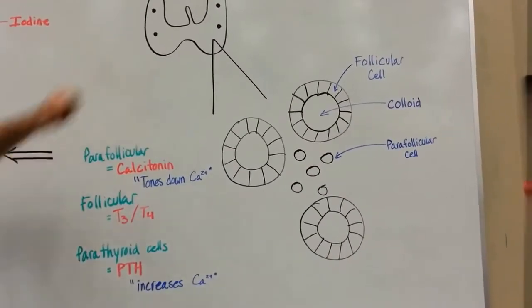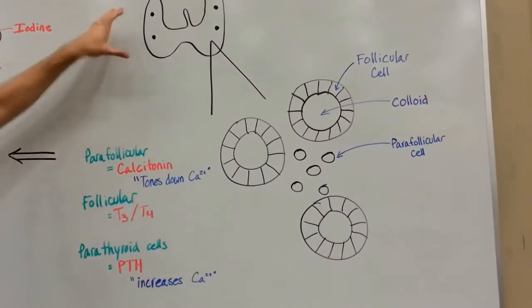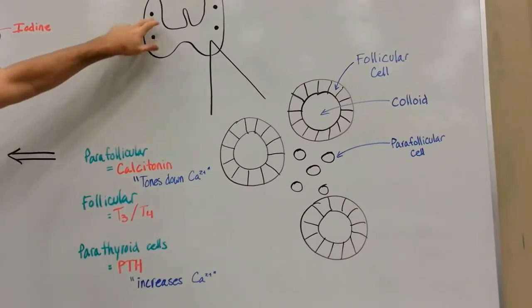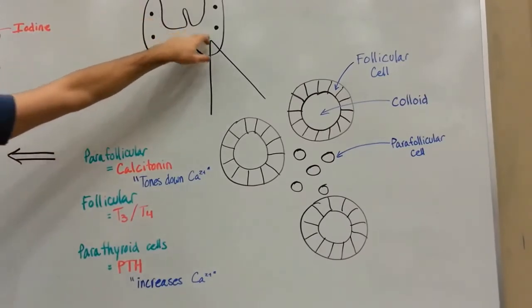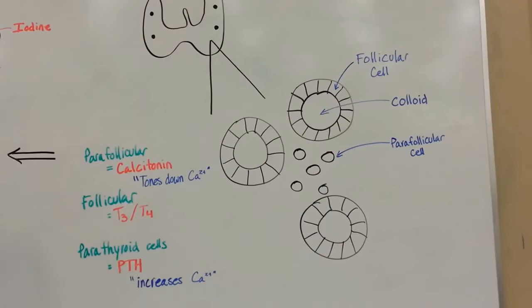Let's now talk about the thyroid and the parathyroid. This is going to be the thyroid gland, the big gland, and within the thyroid you're going to see four smaller glands, and those are going to be your parathyroid glands.